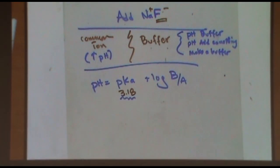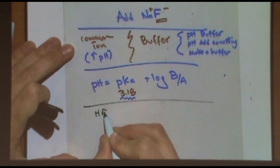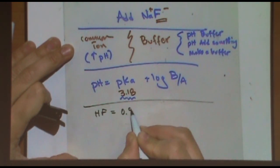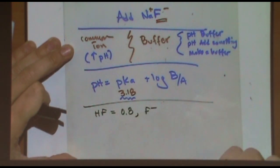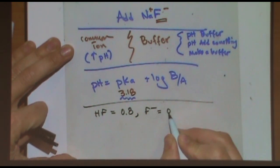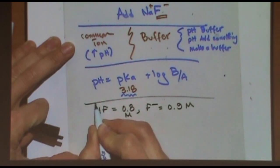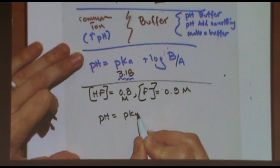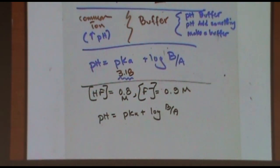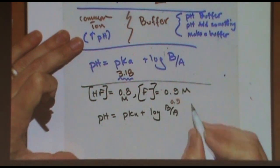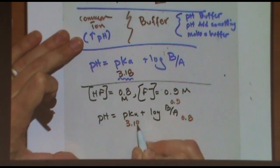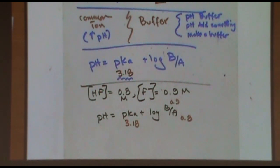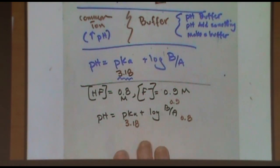Let's do a walkthrough. Say we have HF at 0.8 M and F⁻ at 0.9 M. To find the pH of the buffer alone, just use Henderson-Hasselbalch: pH = pKa + log([base]/[acid]). The base is 0.9 (F⁻), the acid is 0.8 (HF), and the pKa is 3.18. You would expect the pH to be close to 3.18 — a little different, but similar. Unless you have a really bad buffer, it should be close to that number.